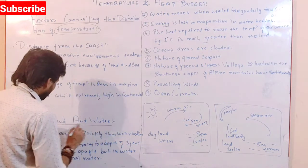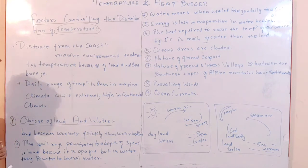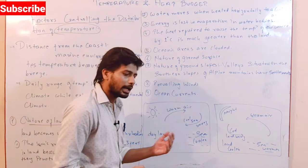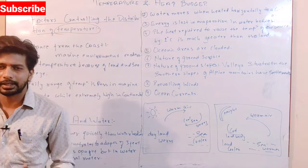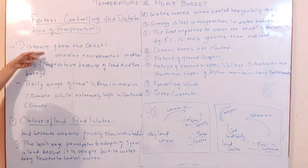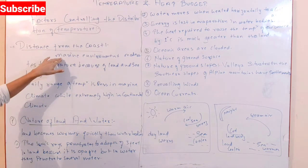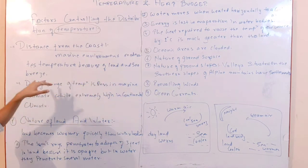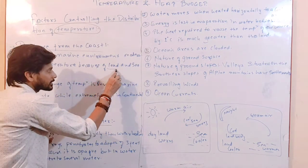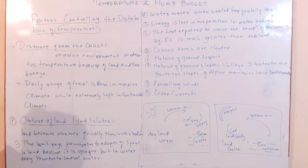The next important factor is the nature of land and water — this is important from UPSC prelims examination point of view. Land becomes warmer quickly than water. Let's understand why through several points about the nature of land and water.